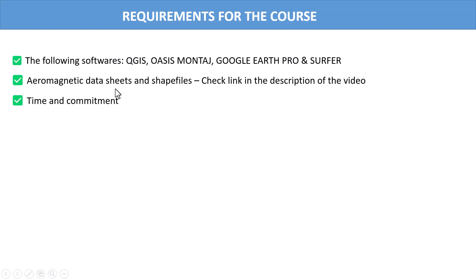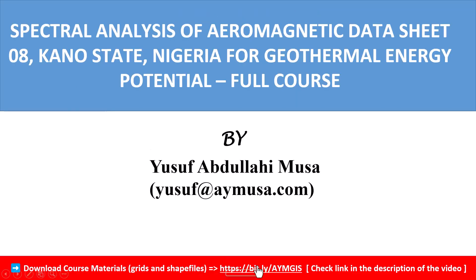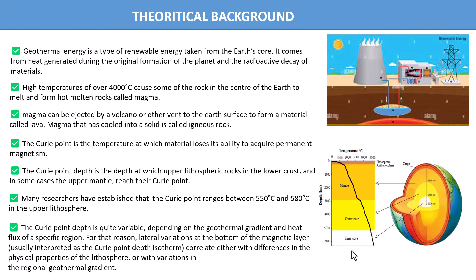For aeromagnetic data, I'm going to provide three aeromagnetic sheets, of which we will use one for the analysis — the remaining ones you can try yourself. You can check the link in the description of the video. I also need your time and commitment because this is going to be a full course. Follow it step by step and follow along if possible to get the actual data sheet I'm using, which is sheet 08, available through the link in the description.